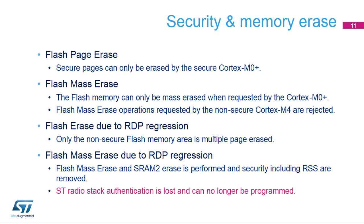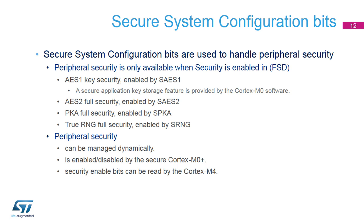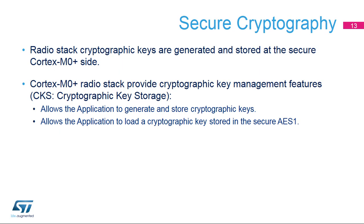In this case, the ST Radio Stack authentication and security is lost and can no longer be programmed. The AES Accelerator 1, AES Accelerator 2, Public Key Accelerator, and True Random Number Generator peripherals can dynamically be made secure by Cortex-M0 Plus firmware through Secure Register Bits in the System Configuration Block. The AES-2, Public Key Accelerator, and True Random Number Generator peripherals provide full peripheral security. The AES-1 provides only key security, which allows the application running on the Cortex-M4 to use cryptography with a secure key. Secure key storage is provided by the Cortex-M0 Plus firmware. The Cortex-M4 may read the peripheral security bit to determine its security status.